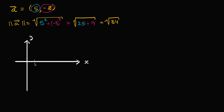Its x component is positive five — one, two, three, four, five — that's five there. And its y component is negative three — one, two, three — so this is negative three. And so we can draw this vector with its initial point at the origin, making it go five in the x direction and negative three in the y direction, so its terminal point will be right over there at the point five comma negative three.